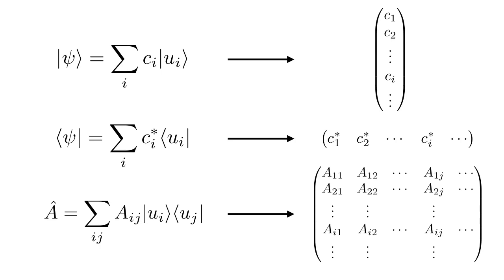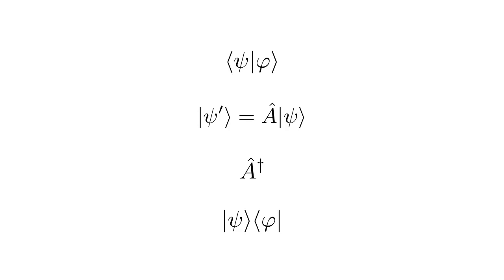As a summary: in the matrix formulation of quantum mechanics, a ket psi expanded in terms of the c coefficients in the u basis is written as a column vector of these c coefficients. A bra psi expanded in terms of the c star coefficients is written as a row vector, and an operator A expanded in terms of the matrix elements Aij is written as a matrix. When we write states and operators as vectors and matrices, all the manipulations we need to perform in quantum mechanics can be performed using the usual rules of matrix multiplication. In the rest of the video I will look at four operations to see what they look like in the matrix formulation — some give scalars, some give kets, and some give operators.